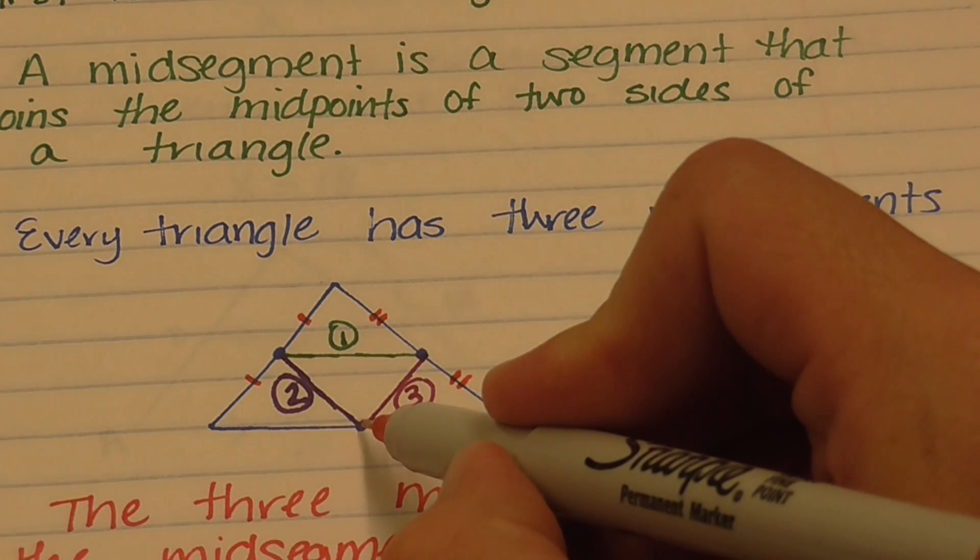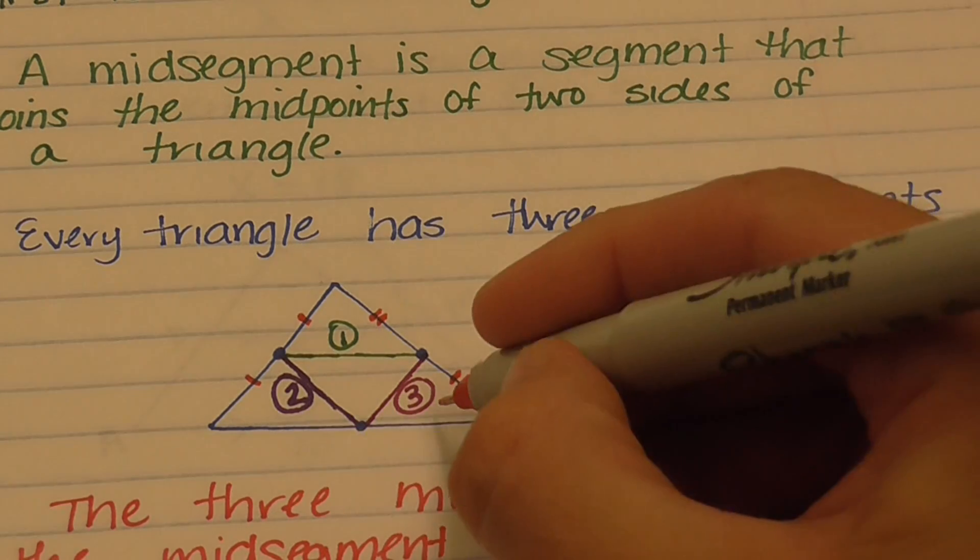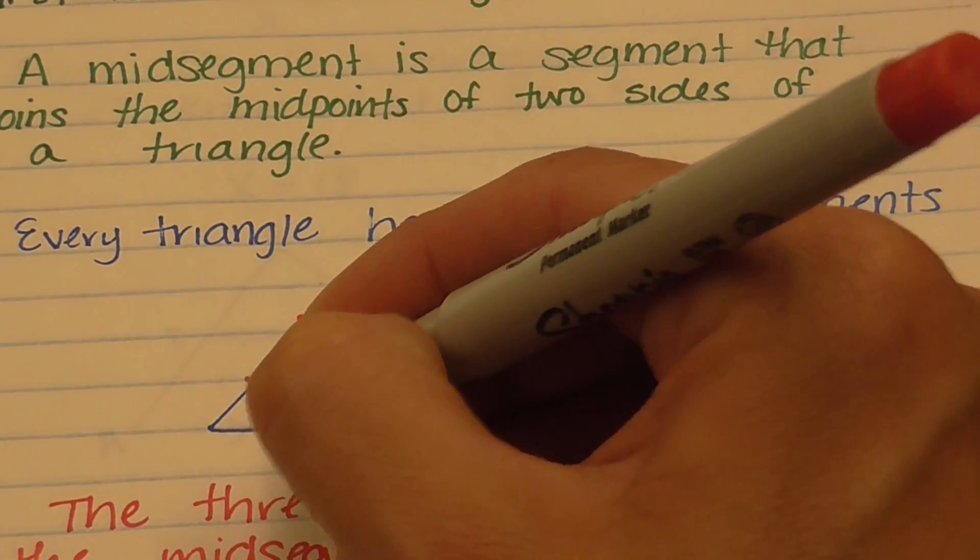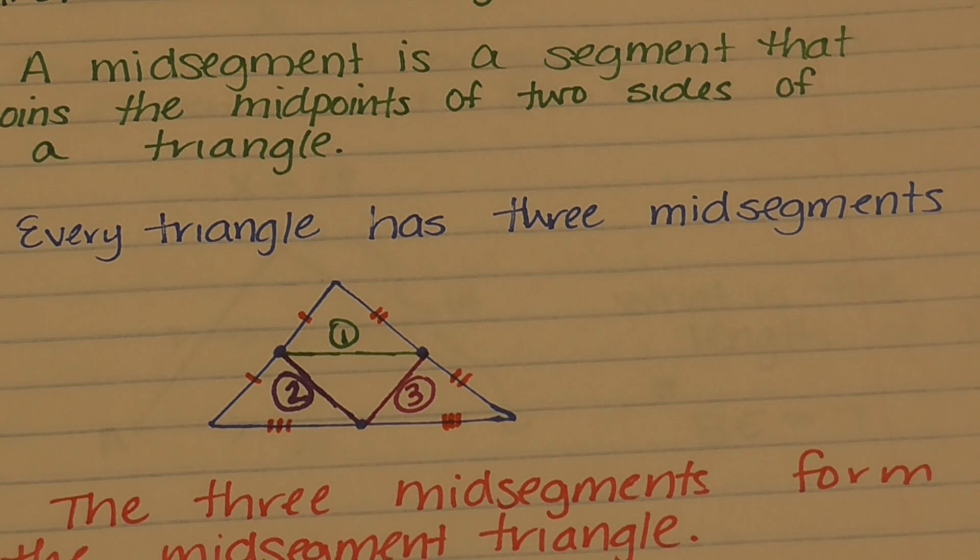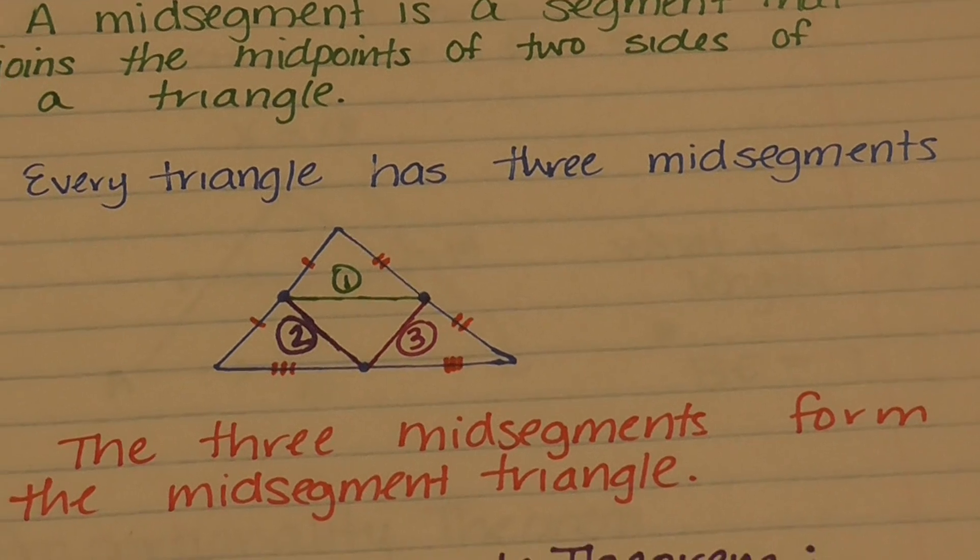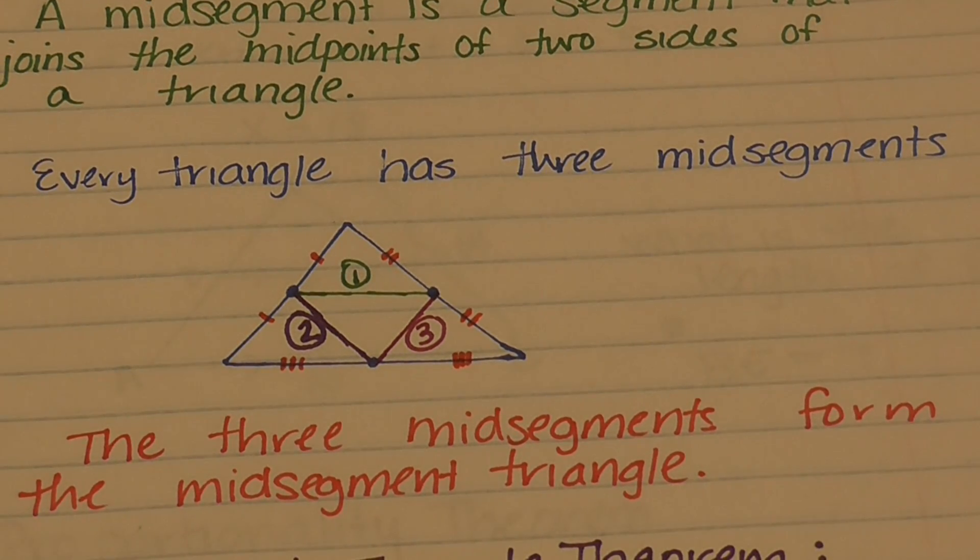Last, this point right here is the very middle of this third side, making this piece congruent or equal to that piece right there. The three mid-segments together, if you draw all three of them in, make the mid-segment triangle.